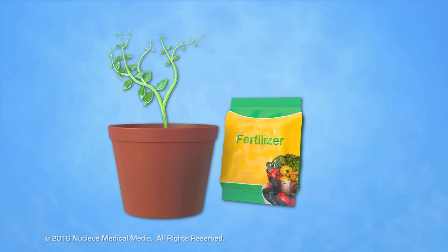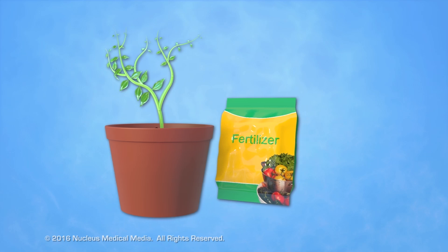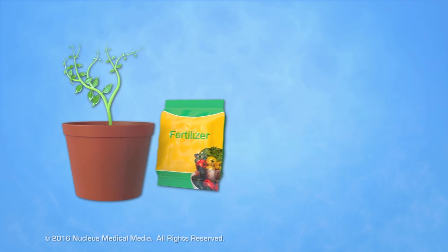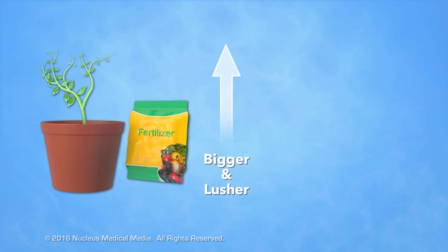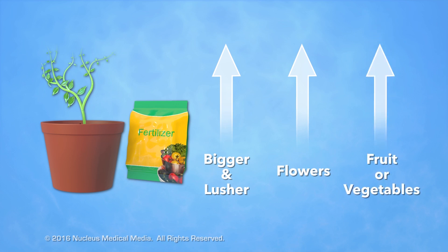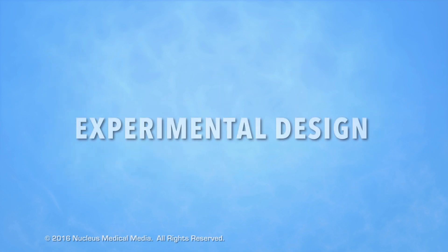Let's design a controlled experiment to test a fertilizer which claims it makes plants grow bigger, lusher, and perhaps produce more flowers, fruit, or vegetables. If you wanted to see if the fertilizer works, how would you set up a controlled experiment to test this claim?